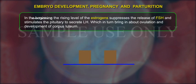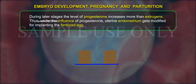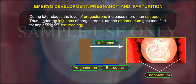In the beginning, the rising level of oestrogen suppresses the release of FSH and stimulates the pituitary to secrete LH, which in turn brings about ovulation and development of corpus luteum. During later stages, the level of progesterone increases more than oestrogens. Thus, under the influence of progesterone, the uterine endometrium gets modified for implanting the fertilized egg.